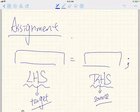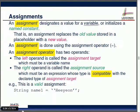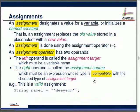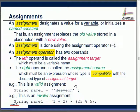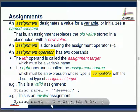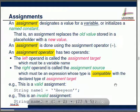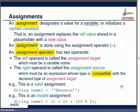Whatever variable you declare, if you declare it to be a string, then you can only store a string into it. For example, 'hi' is a string literal — of course we can store that into a string variable. But why is it invalid if the right-hand side is an integer like a number type, when the left-hand side is declared as a string? You cannot store a number into a string placeholder.